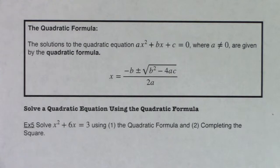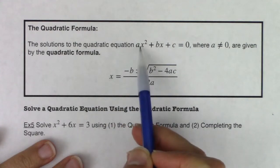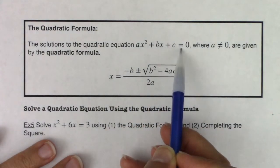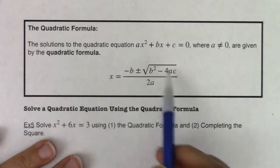Hey Math 31, let's go ahead and take a look at the quadratic formula. So we have the solutions to a quadratic equation ax squared plus bx plus c equals 0, where a does not equal 0, are given by the quadratic formula and here it is.